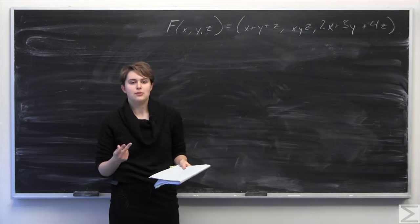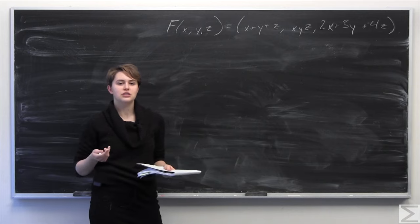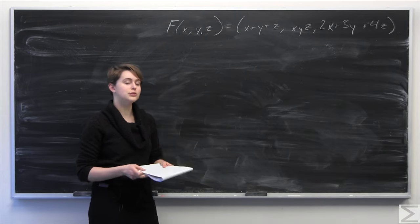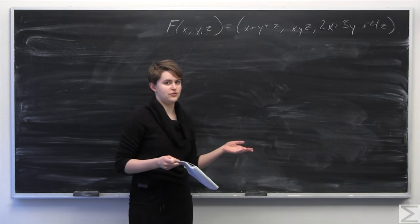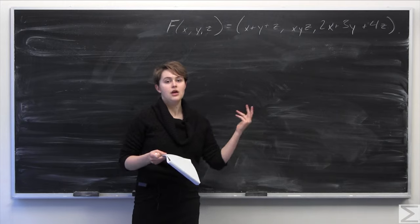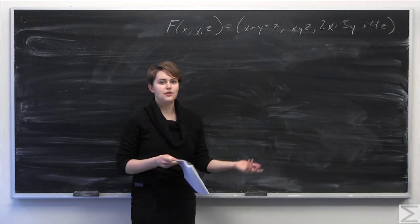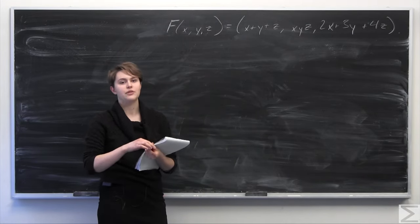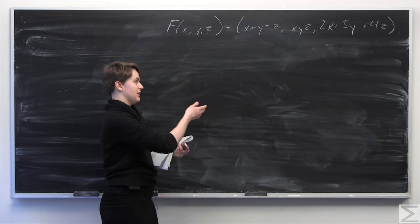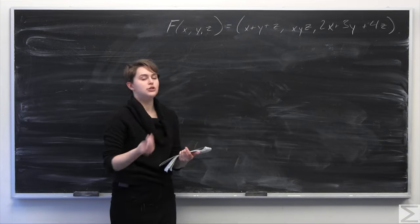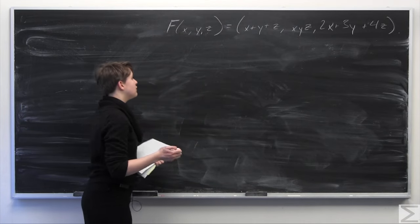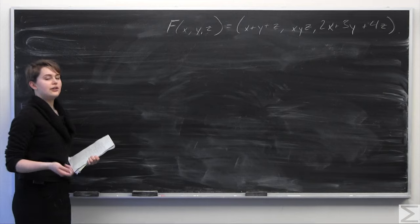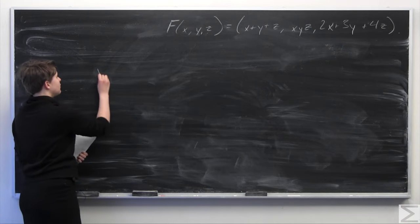This is going to be a two-step problem. First we're going to need to calculate the curl of the vector field. And then once we have the curl of the vector field, which is a vector in and of itself, we need to calculate the divergence of that curl, which will end up being a scalar.